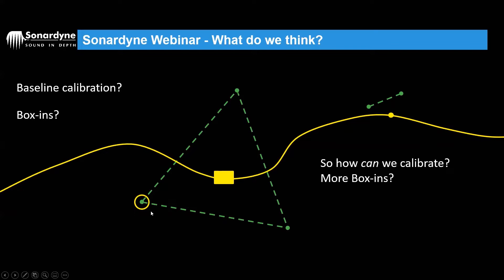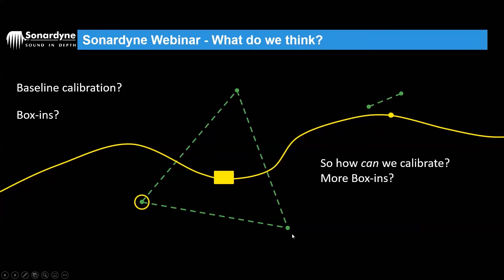We could potentially box in all five compacts, but is that realistic or efficient? Imagine deeper water — the radius required at the surface would be quite large. If you've got five large-radius boxings to cover with the vessel, that's an enormous amount of vessel time. The client probably wouldn't allow it. You may as well have just put another transponder on the seabed and done simple LBL relative calibration.